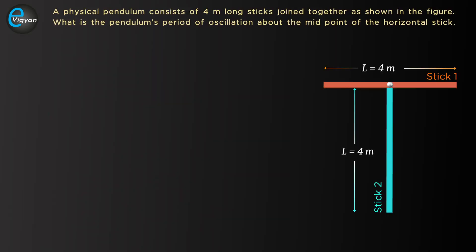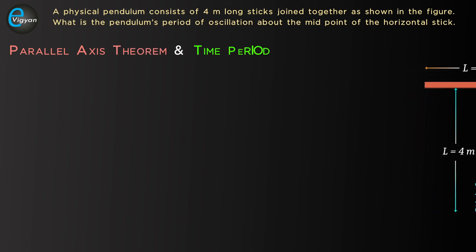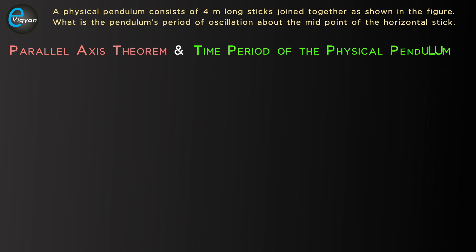The concept behind this problem is the parallel axis theorem and the time period of the physical pendulum. From the parallel axis theorem, the moment of inertia of a body about an axis parallel to another axis passing through its center of mass is I equal to ICM plus MD squared, where ICM is the moment of inertia about an axis passing through the center of mass, M is the mass of the body, and D is the distance of the axis from the center of mass.